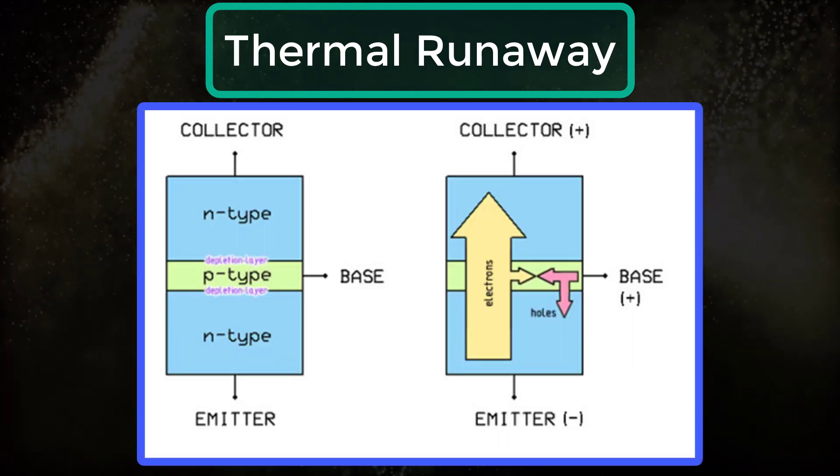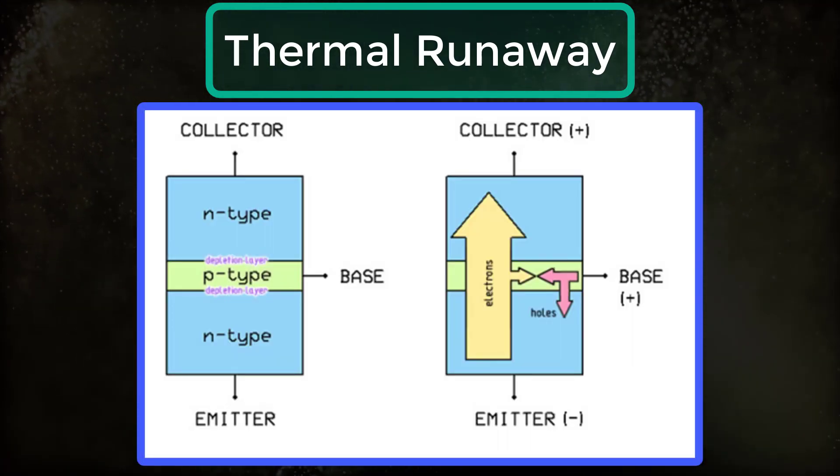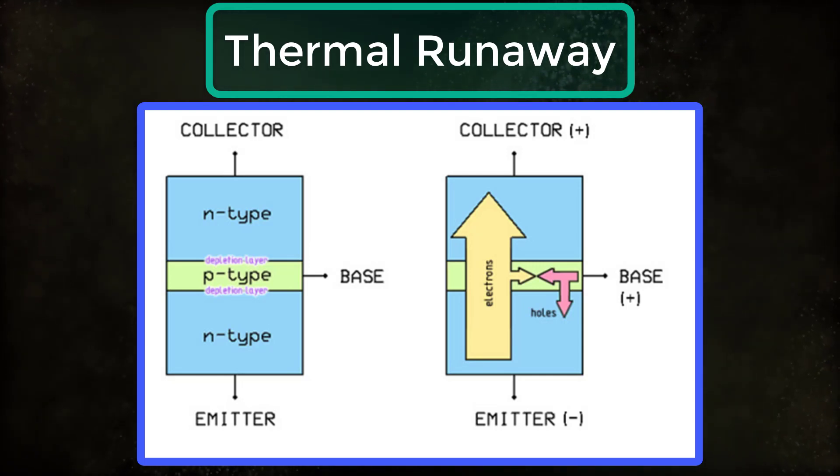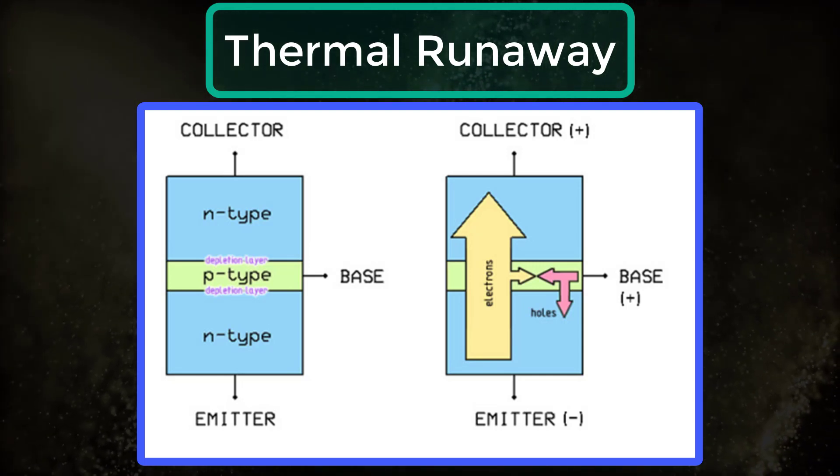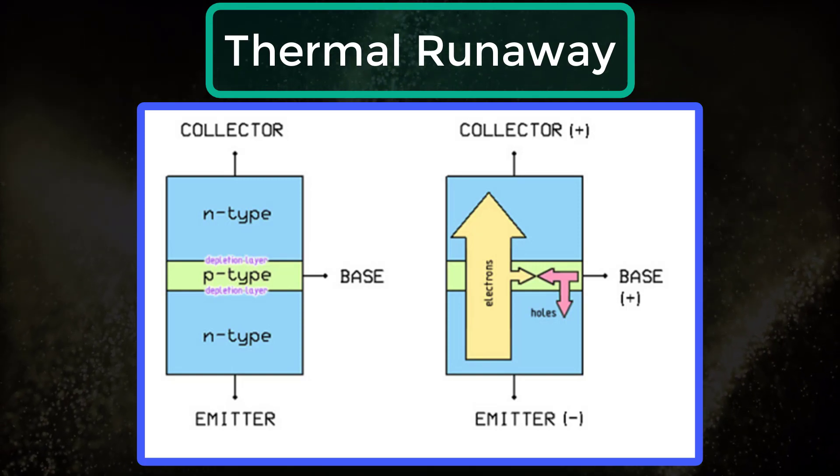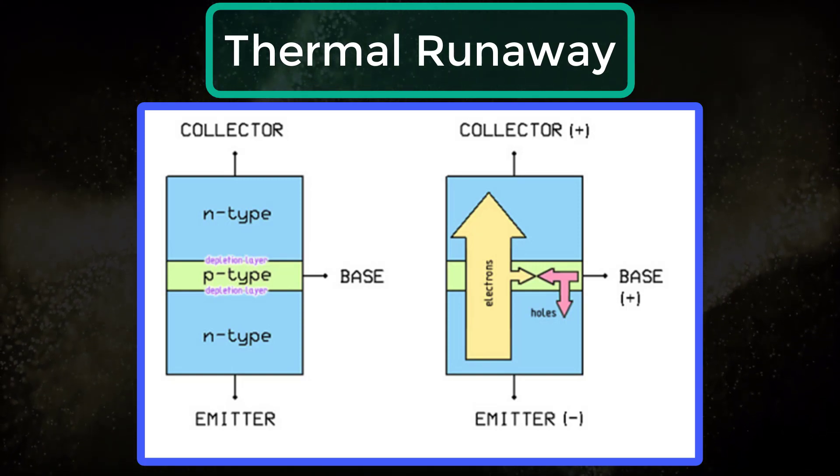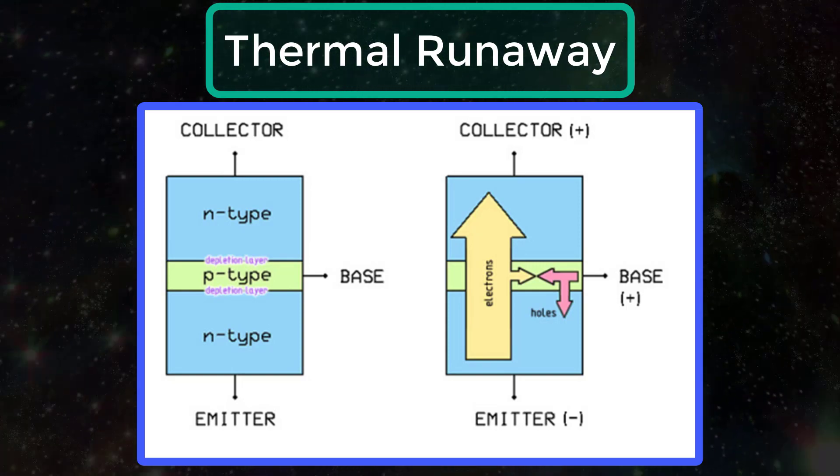We know that in a transistor power is dissipated in the collector and hence it is made physically larger than the emitter and base region. As the power is dissipated there is a chance for the collector base junction temperature to be raised.